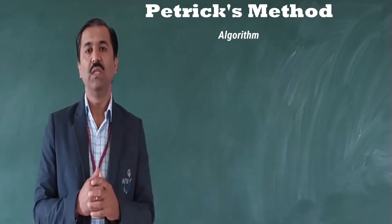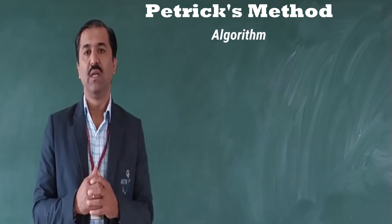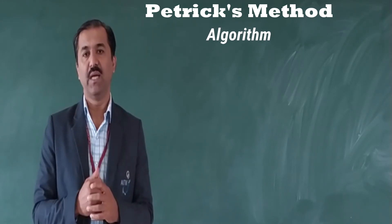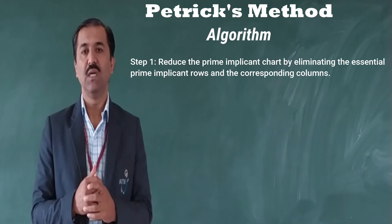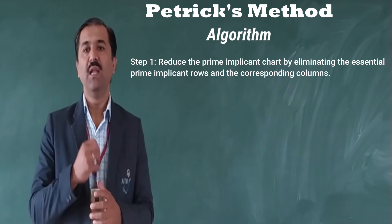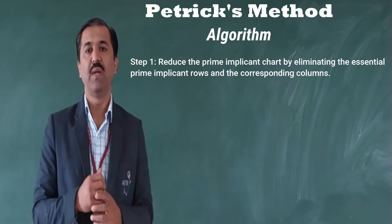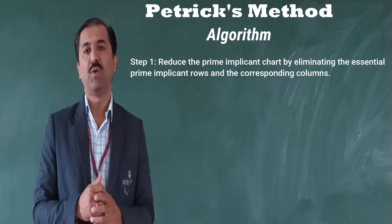So the algorithm that we are going to use in simplifying the boolean function using Petrick method: the first step tells us to reduce the prime implicant chart by eliminating the essential prime implicant rows and the corresponding columns.